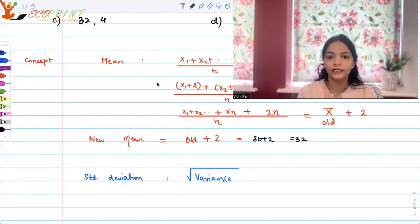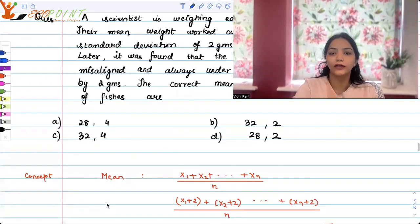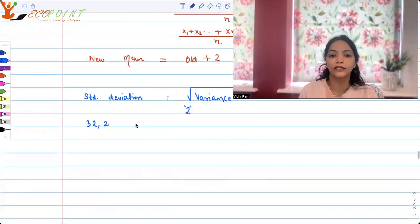So which means that in case all the observations, instead of x1, x2, they are x1 plus 2, x2 plus 2 and so on, there won't be any change. There will not be any change in standard deviation. So your standard deviation still remains 2 and the correct answer is 32 comma 2. And do we have that option? Yes, b is the correct option.